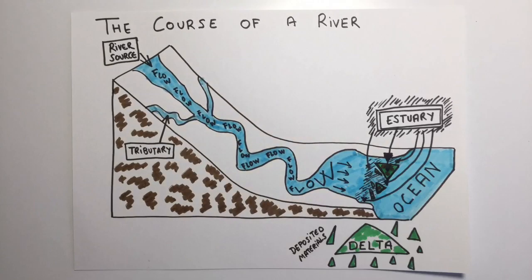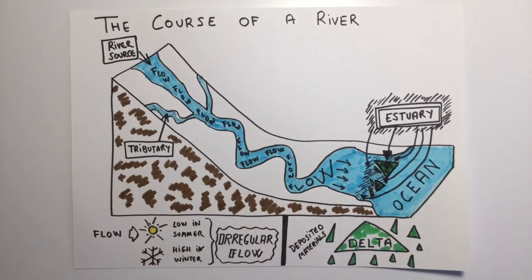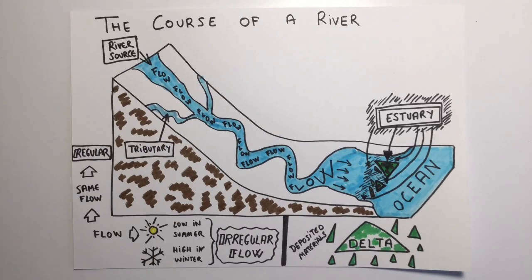Finally, we've got the flow. It's the amount of water a river carries. If the flow is low in summer and high in winter, we can say it has an irregular flow. But if the flow stays the same, we say the flow is regular.